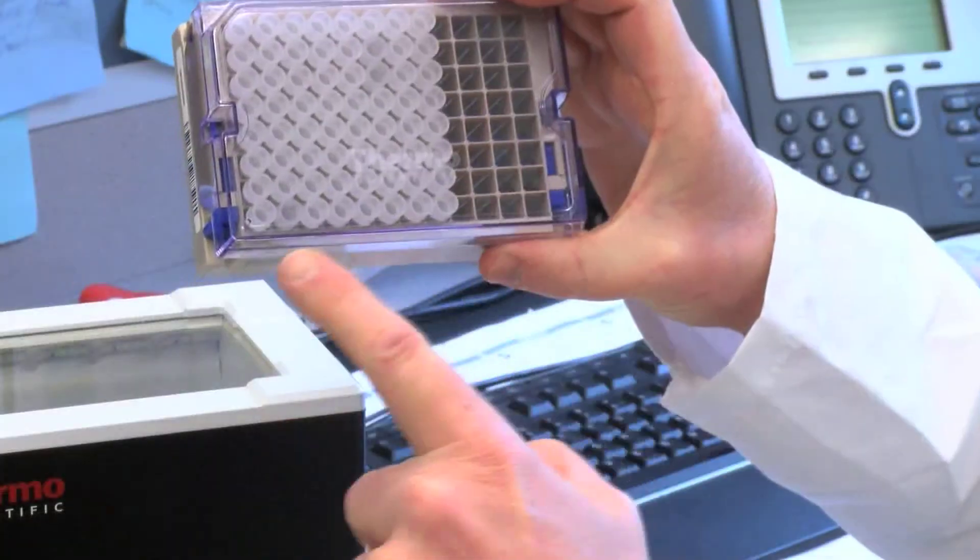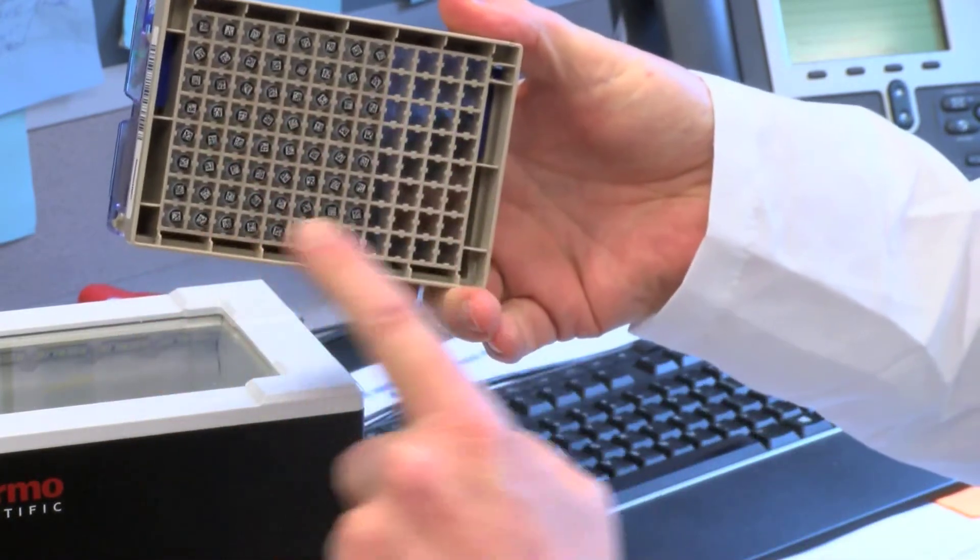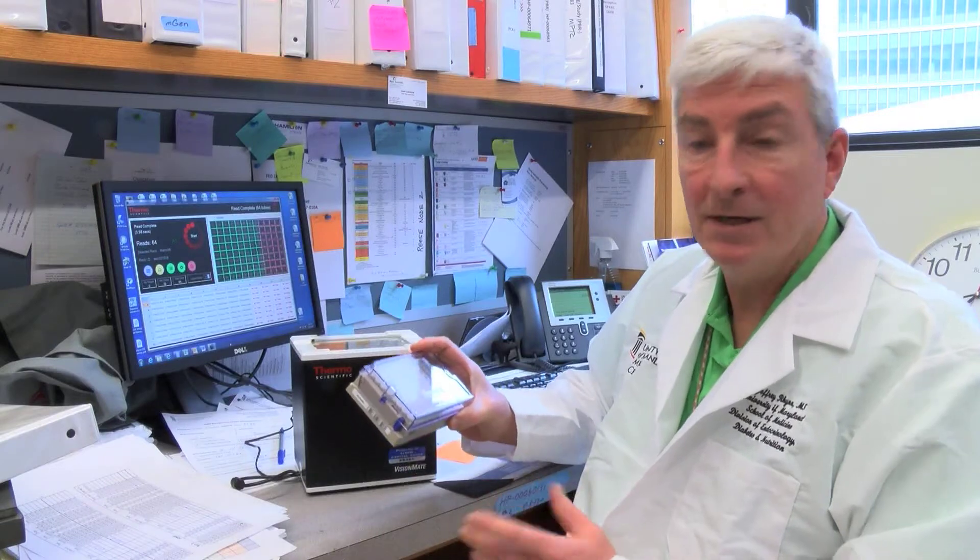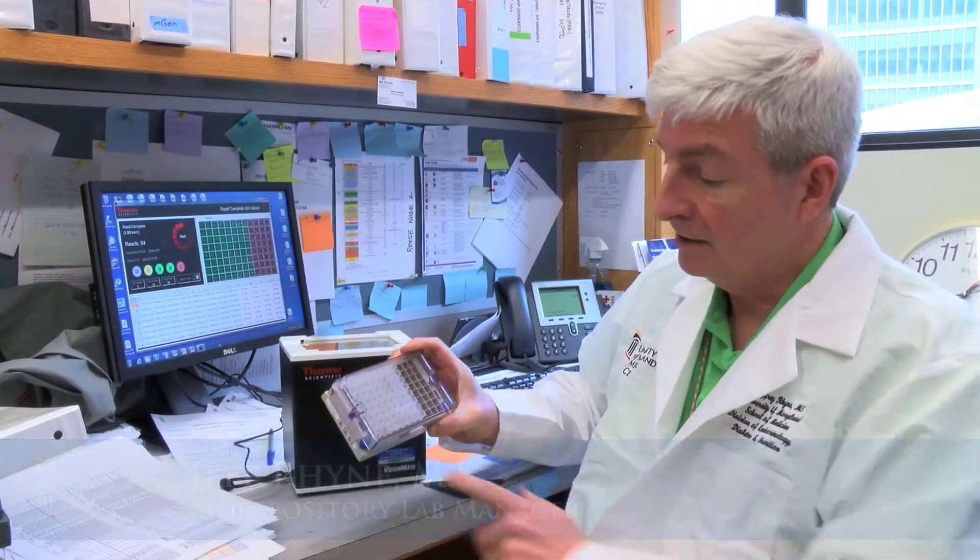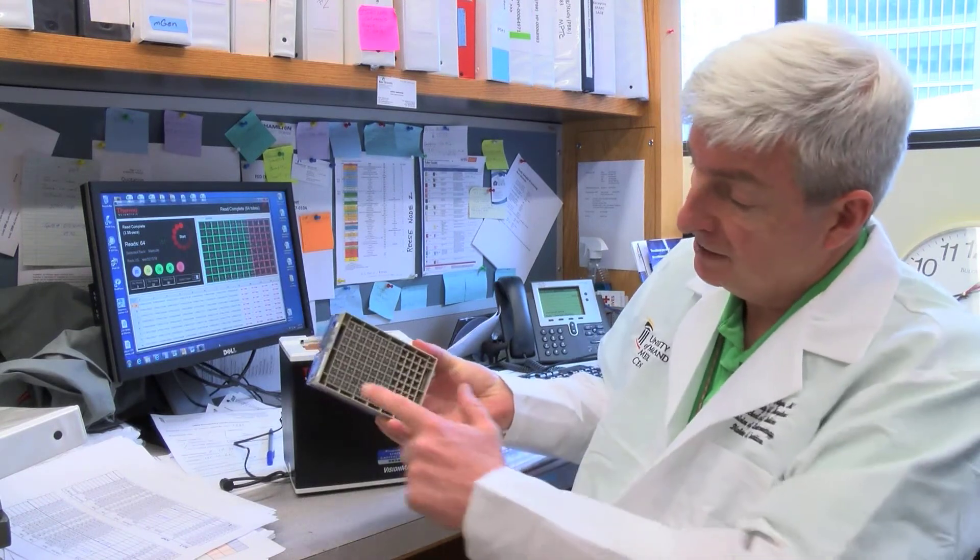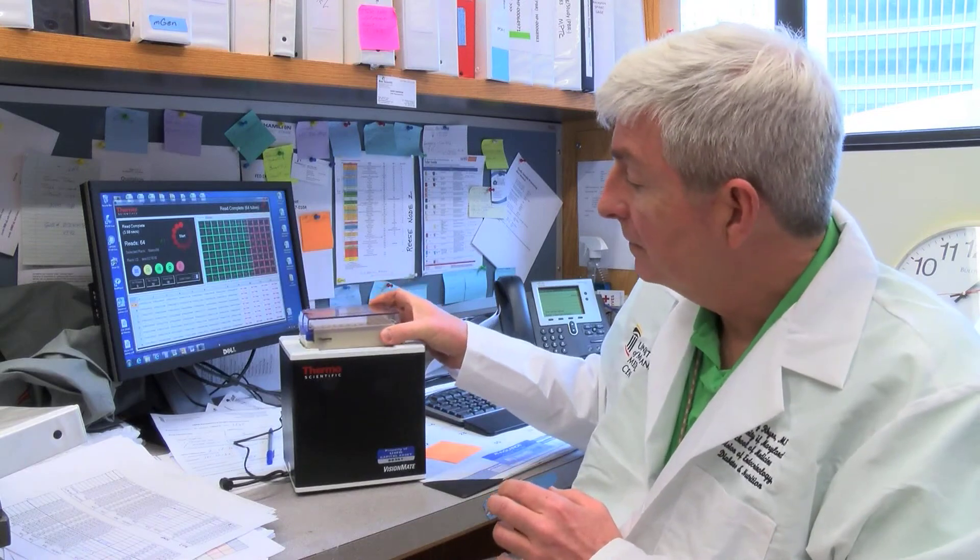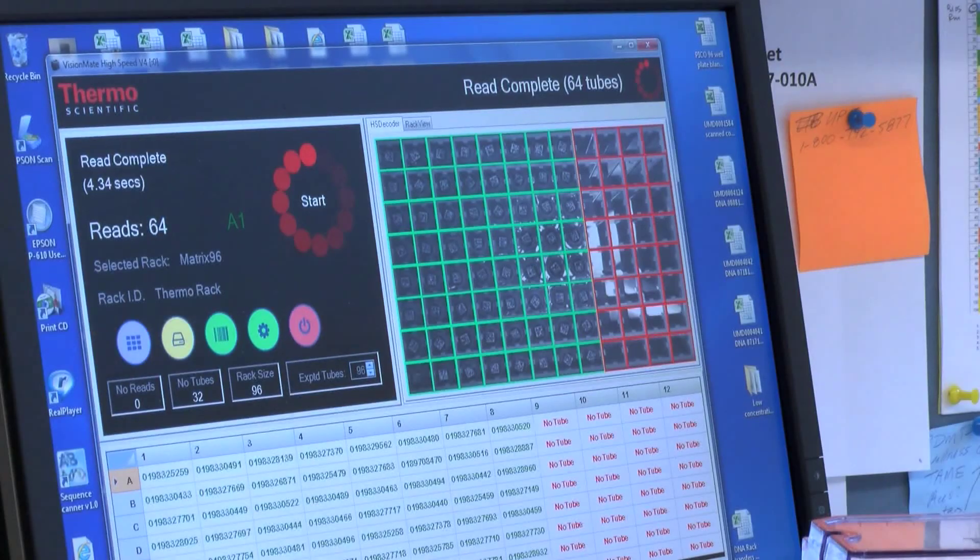Each sample gets a unique barcode so that it can be tracked by computer and retrieved by the robots inside the freezer. What we have here is a sample rack with samples. They're 2D barcoded samples. The 2D barcodes are on the bottom and our reader is right here and we'll read the samples.